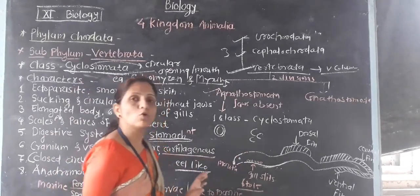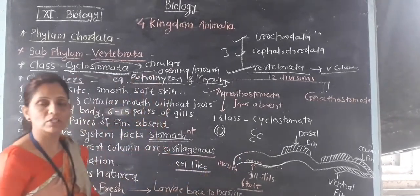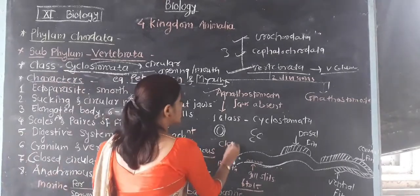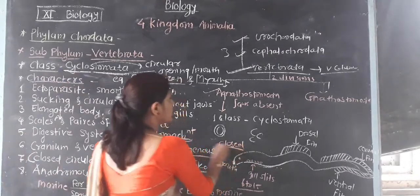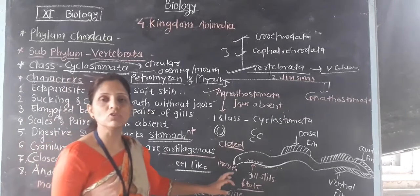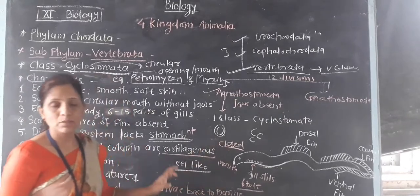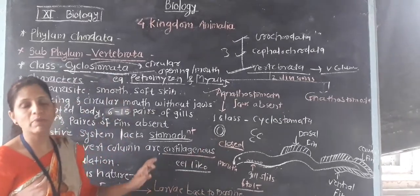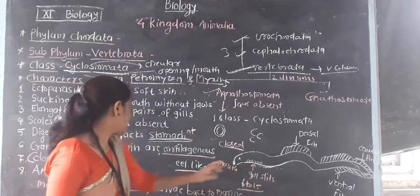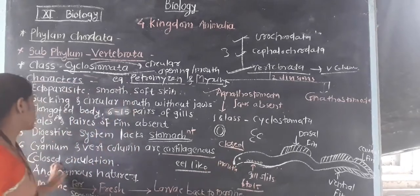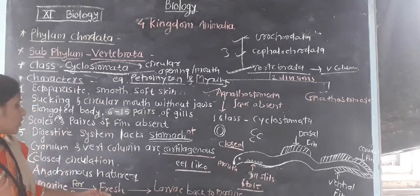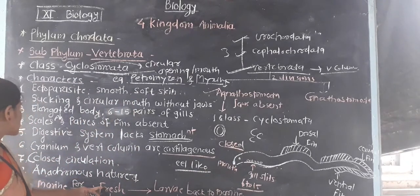Closed type of circulation is present. It means that circulation of blood takes place through arteries, blood vessels, capillaries, and veins. That's why here we have a closed type of circulation.